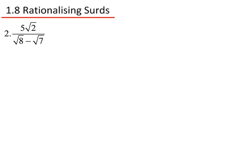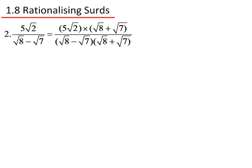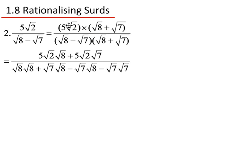Question 2: 5 root 2 divided by root 8 minus root 7. I need to multiply the top and bottom by root 8 plus root 7. On the top, I'd have 5 root 2 times root 8, giving me 5 root 2 root 8, then 5 root 2 times root 7, giving me 5 root 2 root 7. Along the bottom I have root 8 times root 8, then root 7 times root 8, minus root 7 times root 8, minus root 7 times root 7.